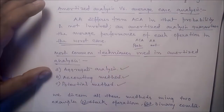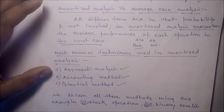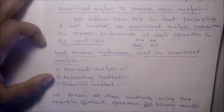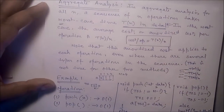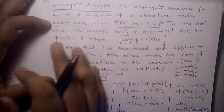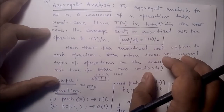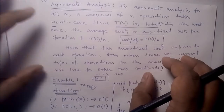The three most common techniques used in amortized analysis are: aggregate analysis, accounting method, and potential method. We will discuss all these methods using two examples: stack operations and binary counter. In aggregate analysis, for a sequence of n operations that takes worst-case time T(n) in total, the worst-case average cost or amortized cost per operation is T(n)/n.